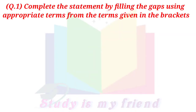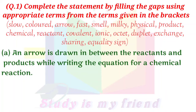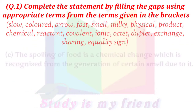Question 1: Complete the statement by filling the gaps using appropriate terms from the terms given in the brackets. A. An arrow is drawn in between the reactants and products while writing the equation for a chemical reaction. B. Rusting of iron is a slow chemical change.